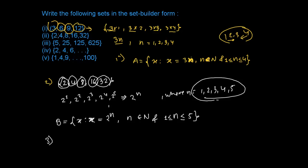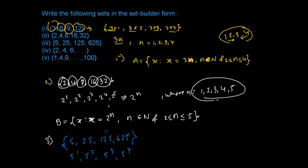The third one is {5, 25, 125, 625}. It's again in base 5: 5¹, 5², 5³, 5⁴. So in the same way, Set C = {x | x = 5ⁿ, n ∈ ℕ, 1 ≤ n ≤ 4}.